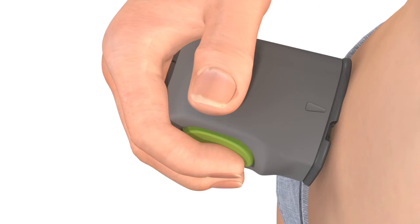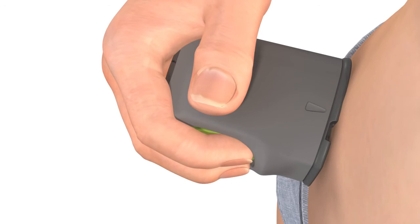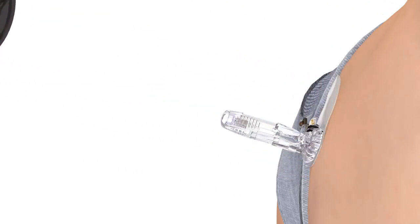Then, press the small bump on the green button a second time and continue to hold it in while you slowly pull the Sertor away from your skin.